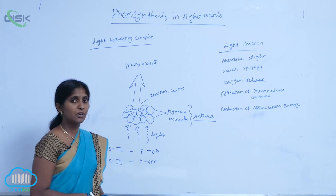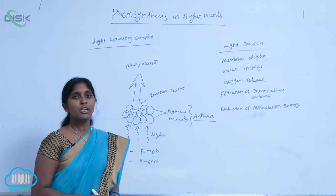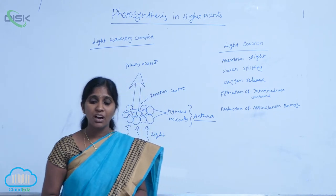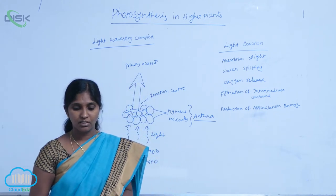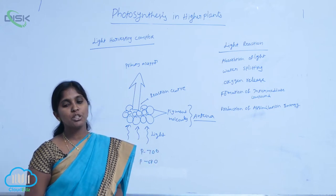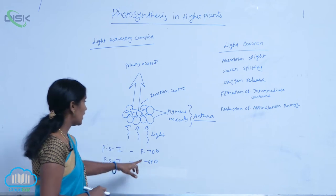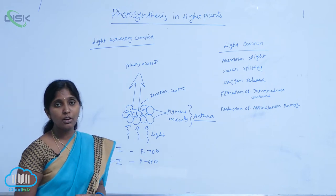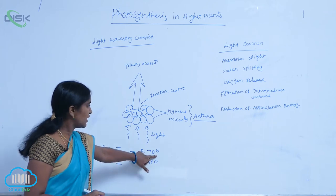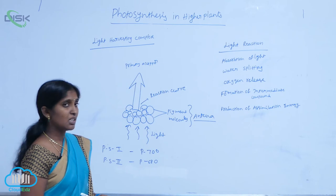The reaction center is different in both PS1 and PS2. In PS1, the reaction center with chlorophyll A is P700. It means chlorophyll A has an absorption peak at 700 nanometers wavelength of light. Hence, it is called P700.